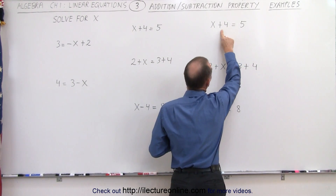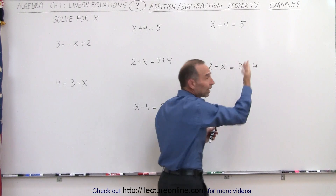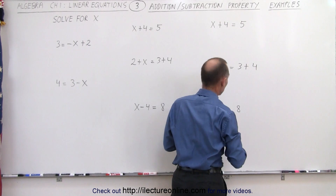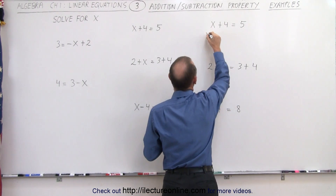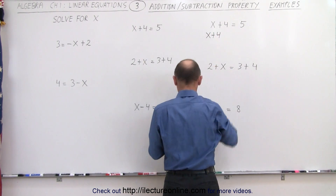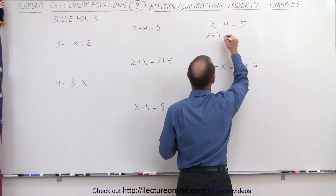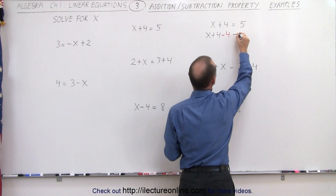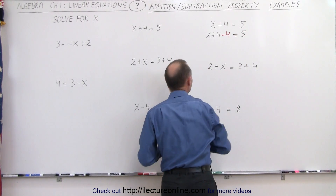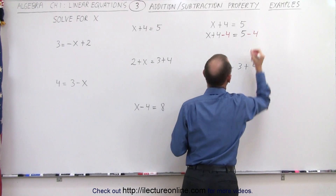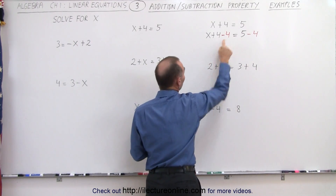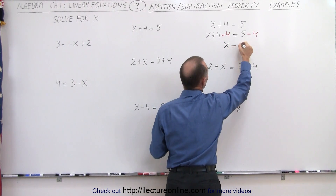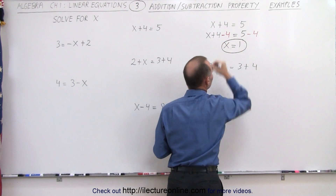So let's first use the addition-subtraction property. Here we want to solve for x, and we have a plus 4 on the left side. We want to get rid of that plus 4, so we can subtract 4 from the left side. We must also subtract 4 from the right side. So I have x plus 4, minus 4, and of course we must do exactly the same on the right side, so 5 minus 4. The 4 minus 4 is 0, so on the left side we simply have x, and on the right side 5 minus 4 is equal to 1, so x equals 1.